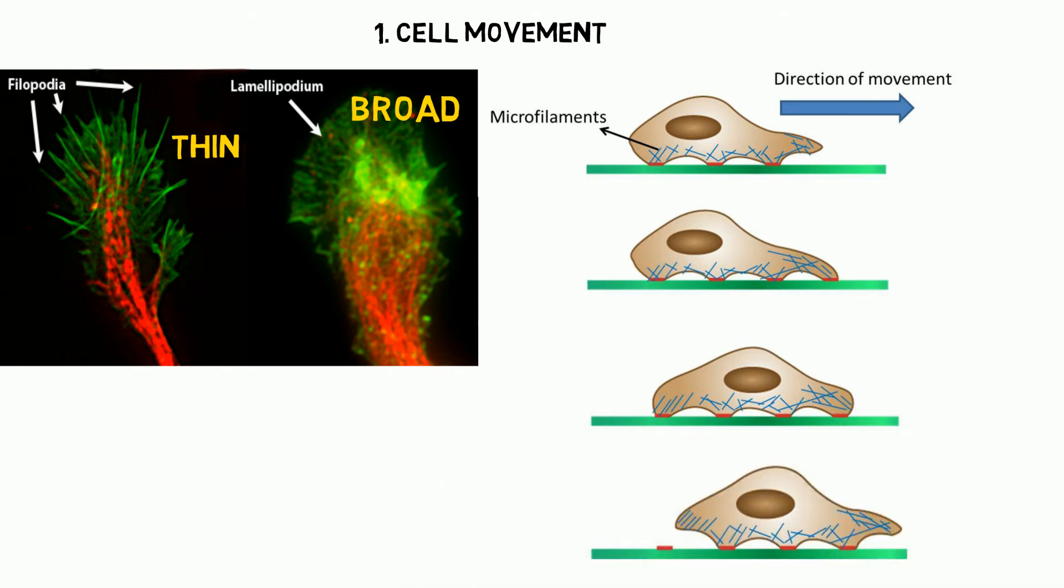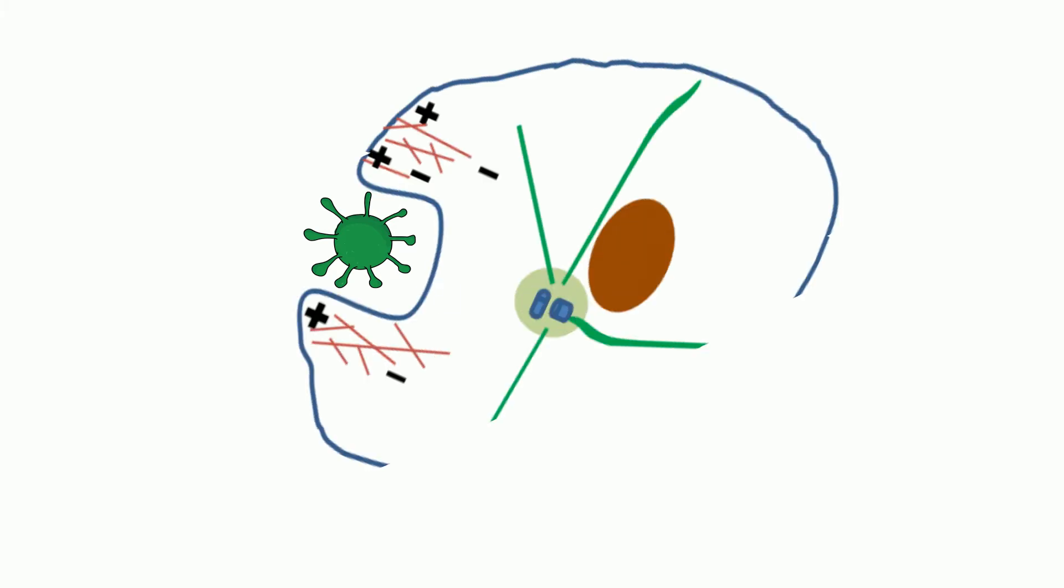Cell movement is essential to allow a cell to respond to its environment, and for processes such as phagocytosis, where a cell engulfs a foreign particle such as bacteria. The second function is cell division.